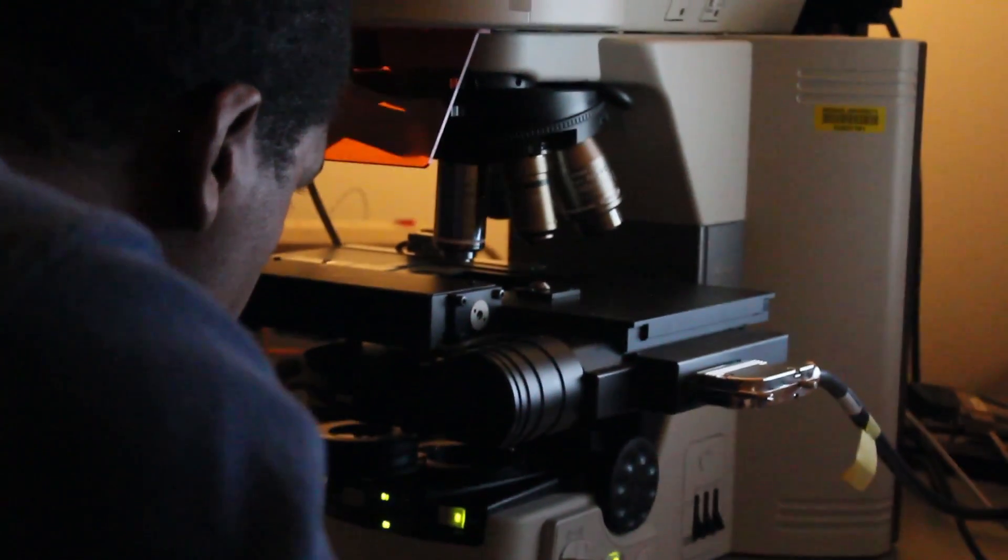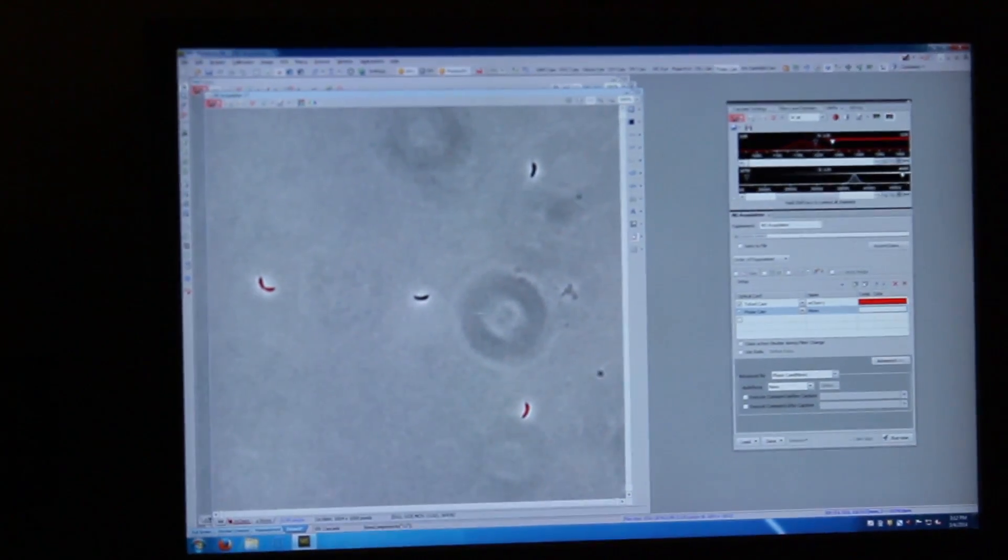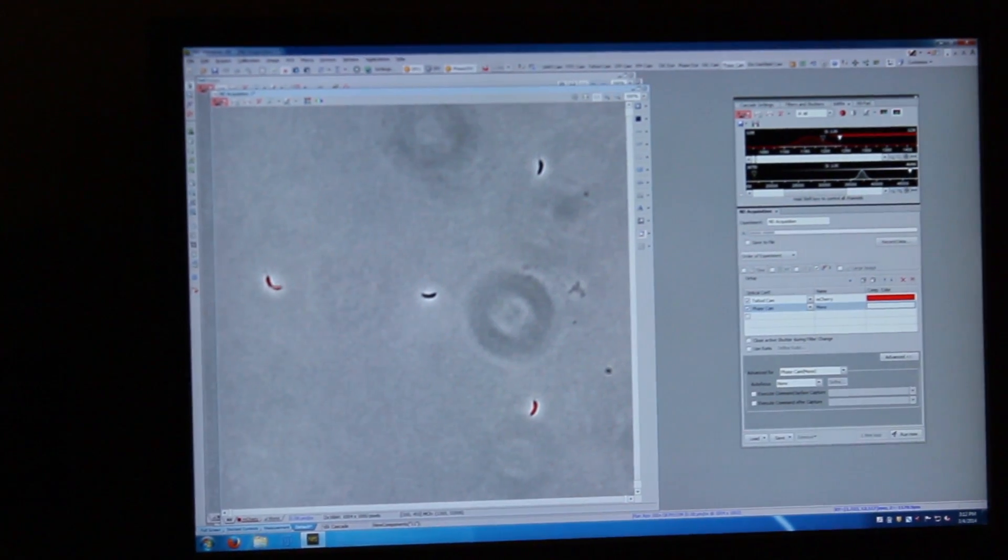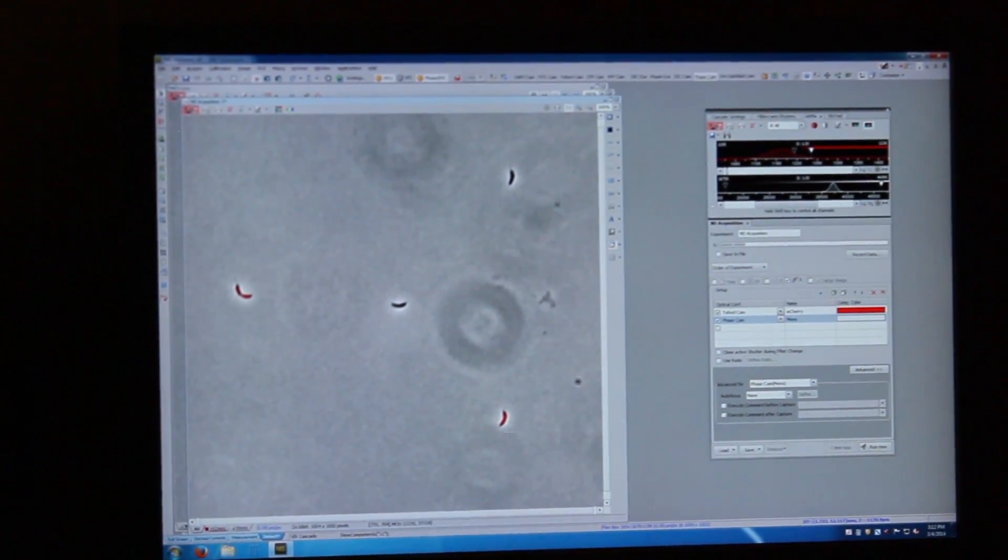Anywhere from every 30 seconds to every 10 hours or any increment in between. For cell growth, Caulobacter takes two hours to divide. So normally we'd like to do either five or ten minute picture intervals.